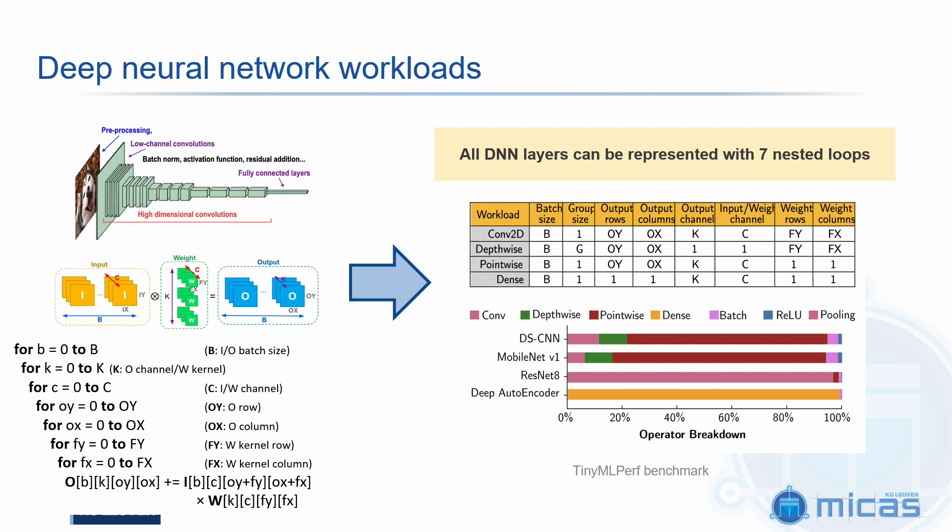Deep neural networks are probably the most popular algorithm for machine learning, as we have seen in the previous presentation as well. They consist in a sequence of layers. Each layer receives as an input an input tensor which is then convolved with a weight tensor to generate an output tensor. This whole convolutional operation can be represented with seven nested loops, and they are sufficient for representing essentially any kind of layer we can encounter within these models — which can be depthwise layers, pointwise layers, 2D convolutions, or even fully connected layers. We also take as target workloads the benchmark models from TinyML Perf, which all contain these kinds of layers, and they are a very suitable starting point for our evaluations.